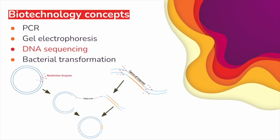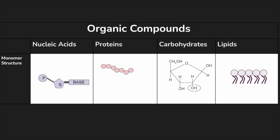Make sure you know the four main categories of biological macromolecules: nucleic acids, proteins, carbohydrates, and lipids. Know their monomers and the structure of their monomers. Nucleic acids are made of nucleotides, proteins are made of amino acids, carbohydrates are made of monosaccharides, and lipids are made of fatty acids and glycerols.